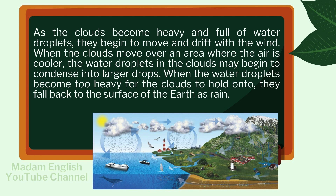As the clouds become heavy and full of water droplets, they begin to move and drift with the wind. When the clouds move over an area where the air is cooler, the water droplets in the clouds may begin to condense into larger drops. When the water droplets become too heavy for the clouds to hold on to, they fall back to the surface of the earth as rain.